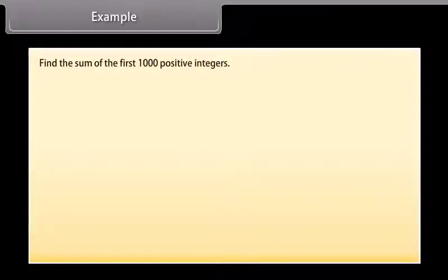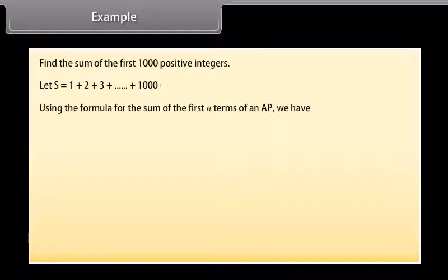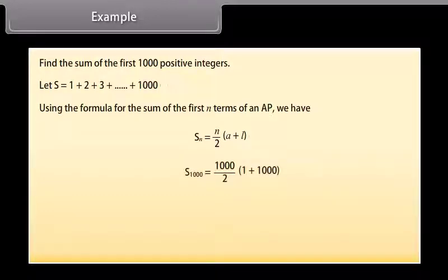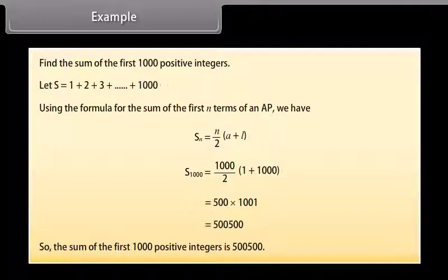Find the sum of the first 1000 positive integers. Let S = 1 + 2 + 3 + ... + 1000. Using the formula for the sum of the first n terms of an AP, S(n) = n/2 × (a + l). Substituting the values, S1000 = (1000/2) × (1 + 1000) = 500 × 1001 = 500500. So the sum of the first 1000 positive integers is 500500.